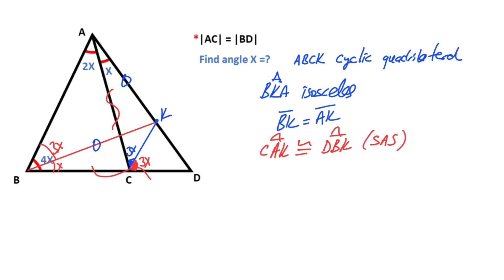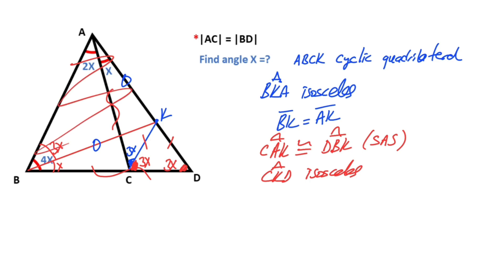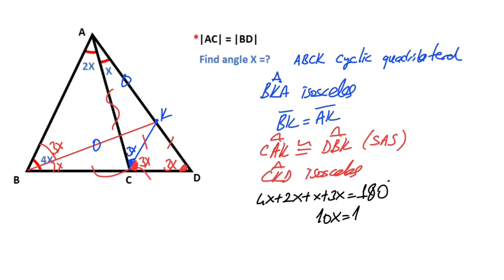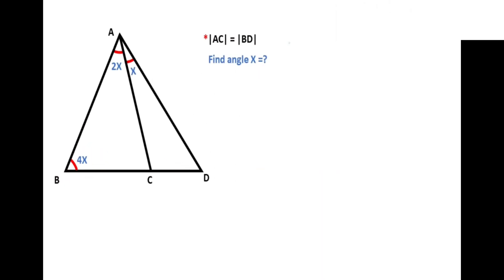So according to side-angle-side, these two triangles are congruent, and congruent triangles have the same sides and angles. Therefore, if there's a side opposite of angle x, then the opposite of angle x must be equal to that same side. That means triangle C, K, D is an isosceles triangle, so here must be equal 3x. If you focus on the biggest triangle, we know that sum of the interior angles equals 180 degrees. Therefore 4x plus 2x plus x plus 3x must equal 180 degrees, so 10x equals 180 degrees, that means x equals 18 degrees. This was the first method.